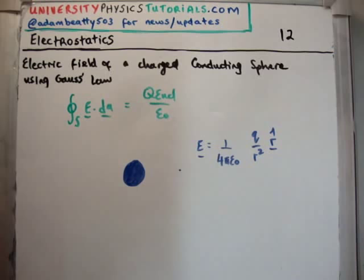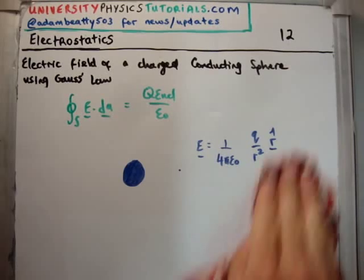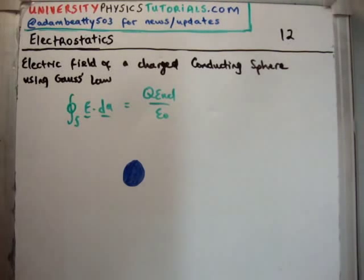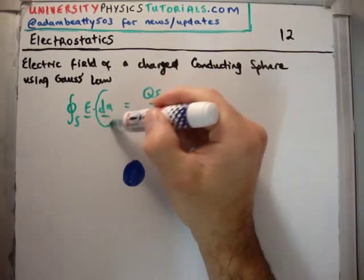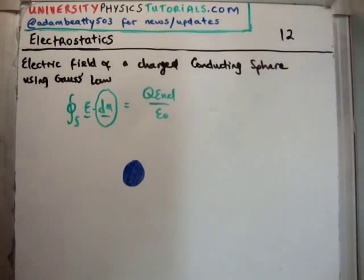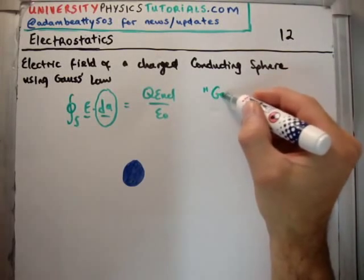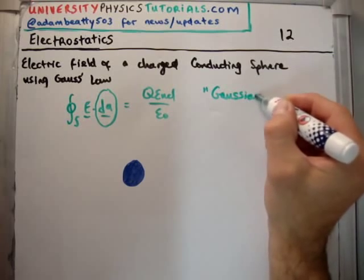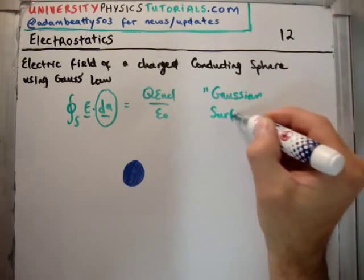If the electric field is radial, that's a very important point because we're going to try and come up with some symmetry. In order to use Gauss's law, we need symmetry, so we need some sort of a surface because we're integrating with respect to a surface. What we need to come up with is known as a Gaussian surface.